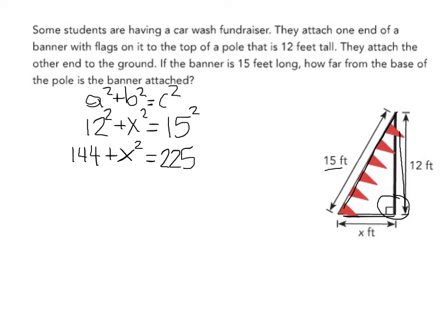So I'm trying to get this x squared by itself right now. That's my goal. So I'm going to take away 144 from each side. So that will leave me with x squared equals, and then 225 minus 144 equals 81.